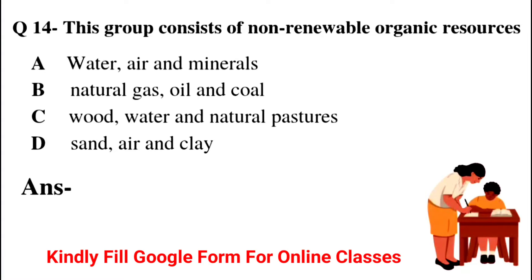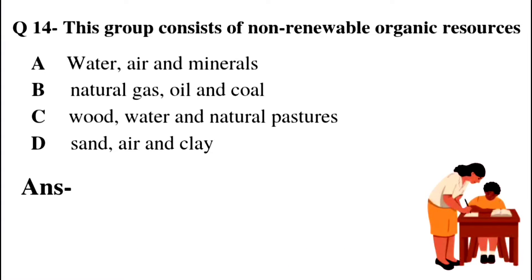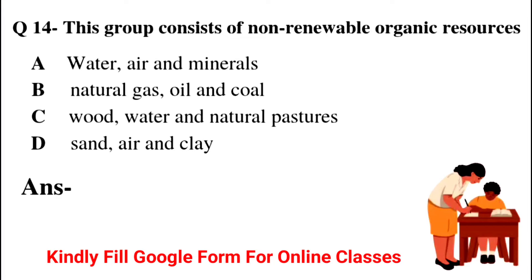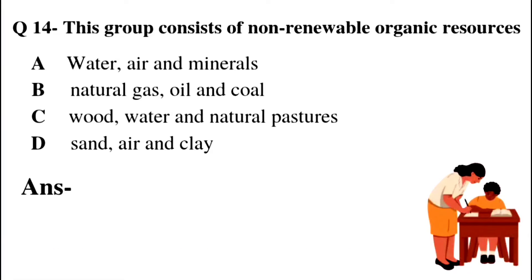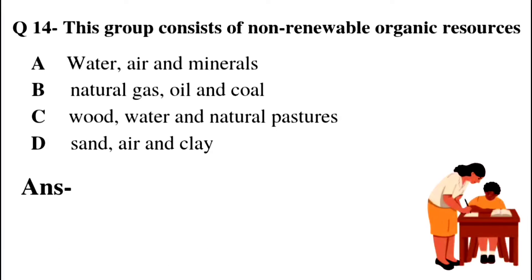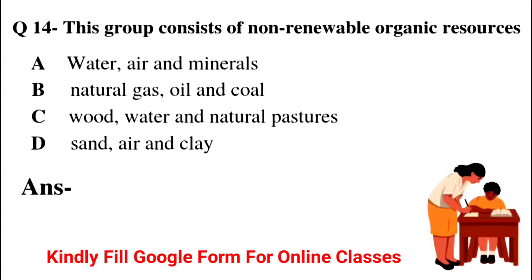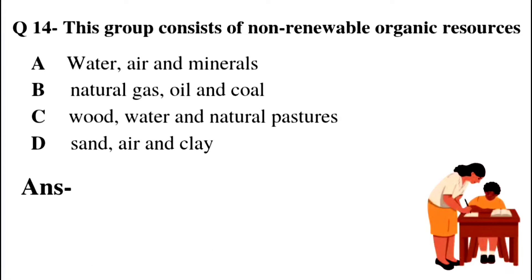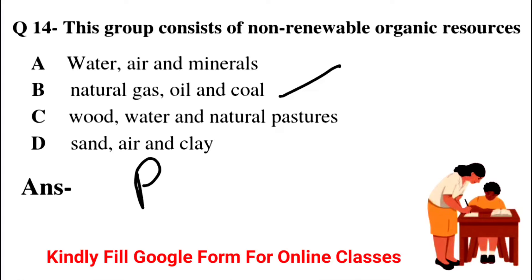Question number 14: This group consists of non-renewable organic resources — Option A: Water, air, and minerals. Option B: Natural gas, oil, and coal. Option C: Wood, water, and natural pastures. Option D: Sand, air, and clay. Non-renewable organic resources are those that cannot be replenished easily. Natural gas, oil, and coal are classic examples of non-renewable organic resources. So Option B is the right answer.